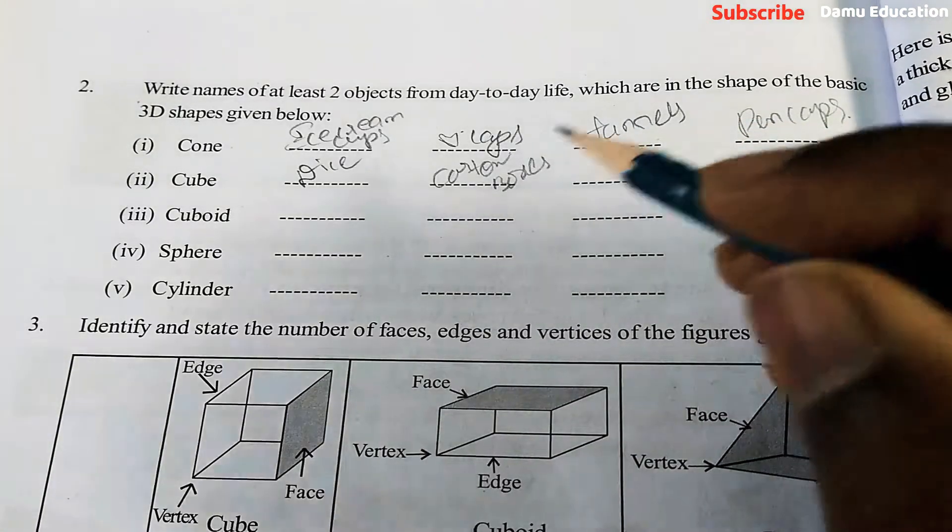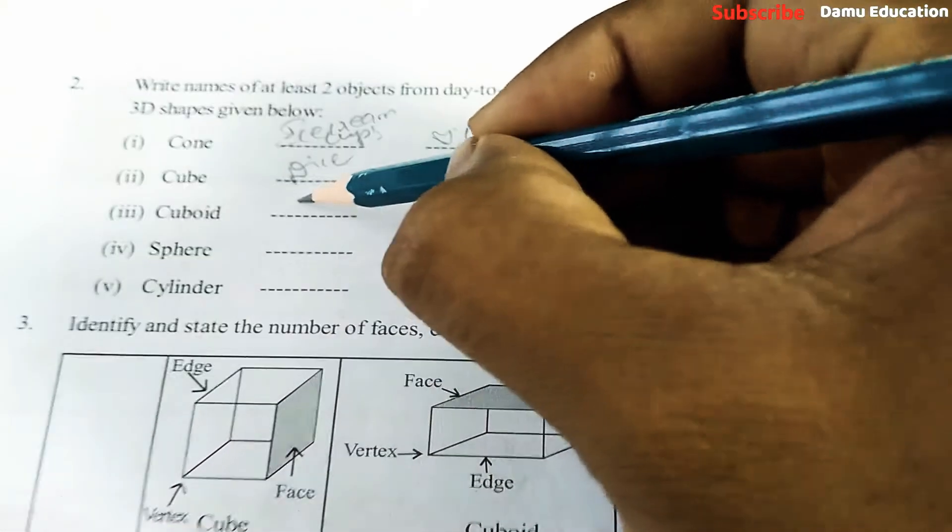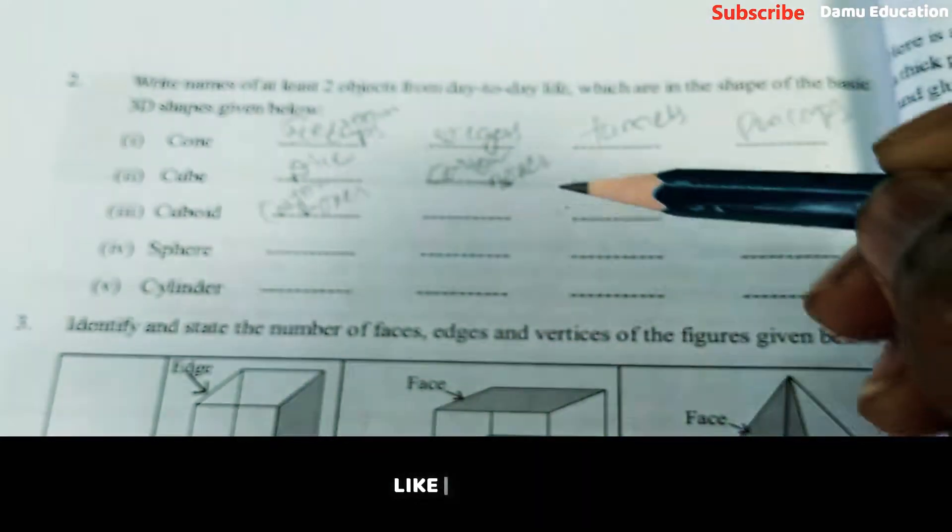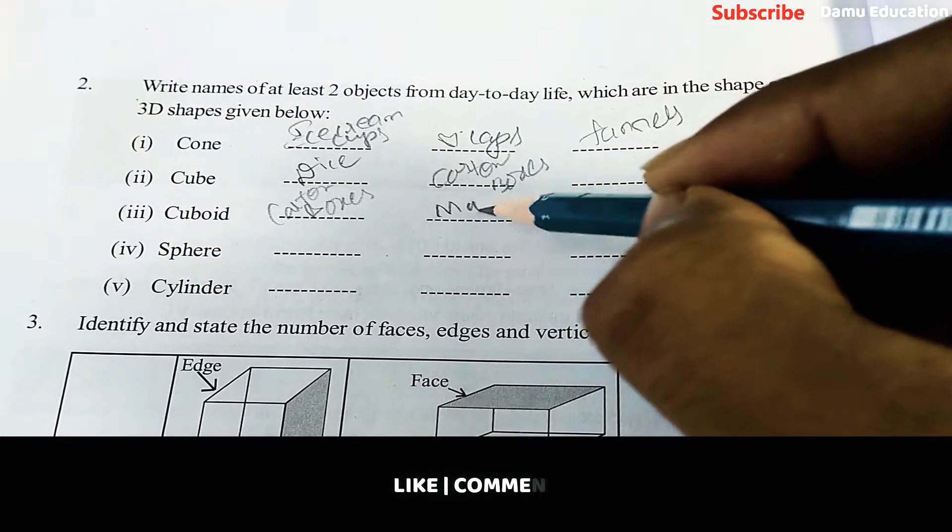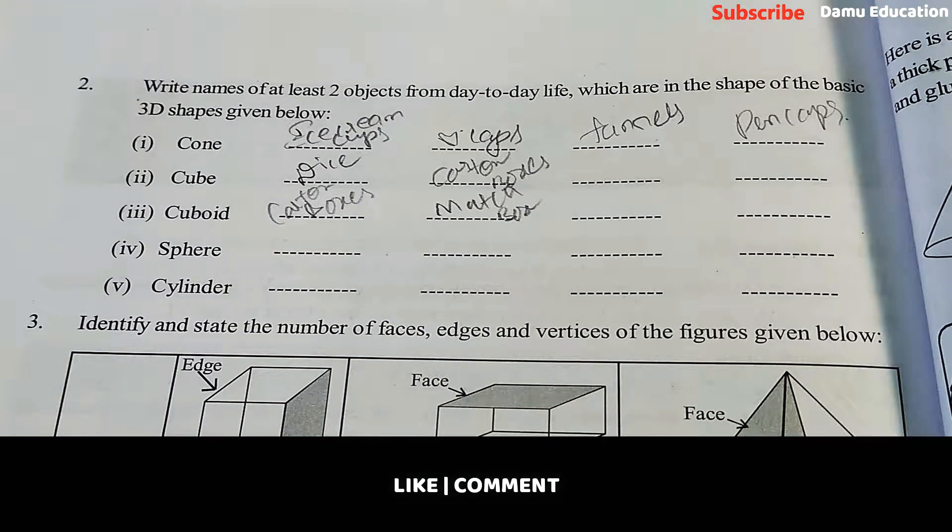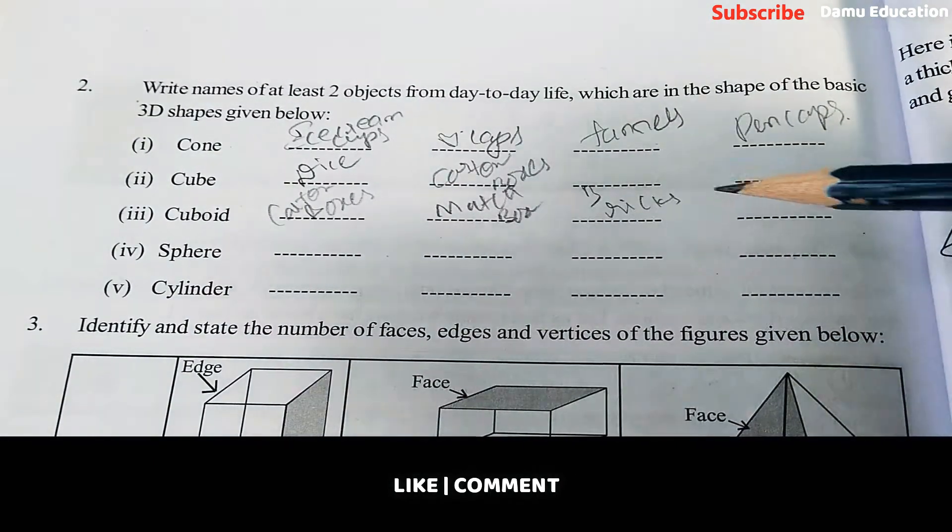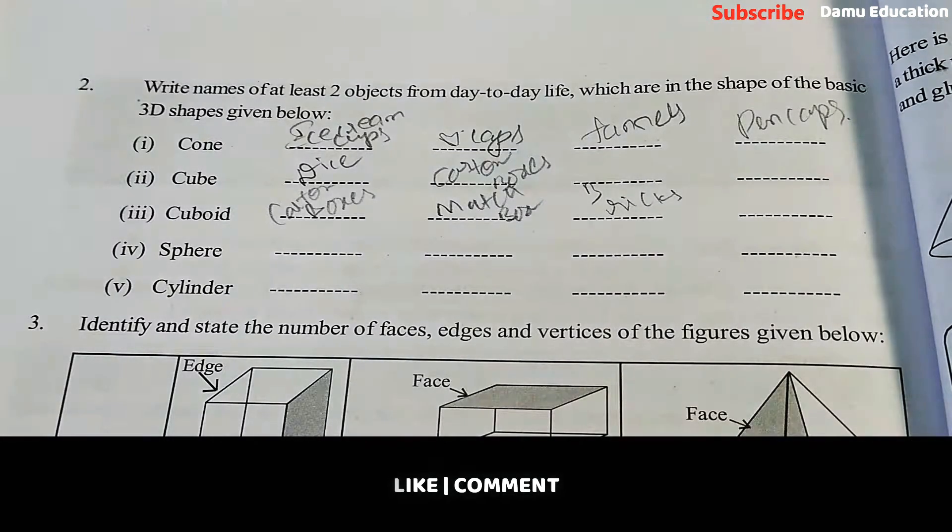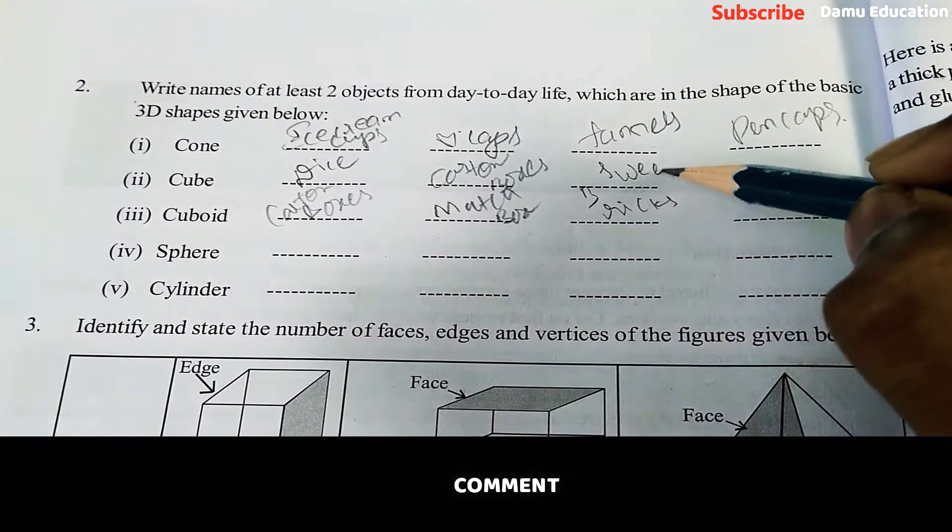Cuboid will be some metal boxes, cotton boxes, matchbox, bricks. So many things exist - some sweets for cube, sweets will be here too.